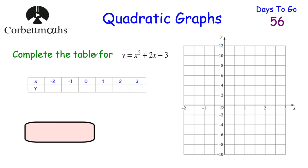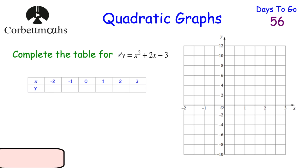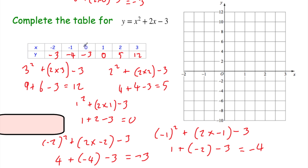Now this one is for you to try. Can you complete the xy table for y equals x squared plus 2x minus 3? Pause the video and work out these points. To find each y value, square the x value, add double the x value, then take away 3. The answers would be: negative 3, 0, 5, 12, and so on.